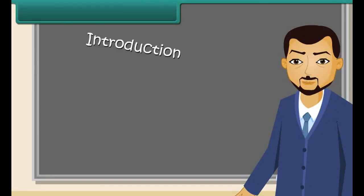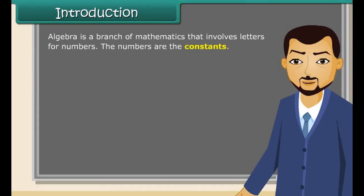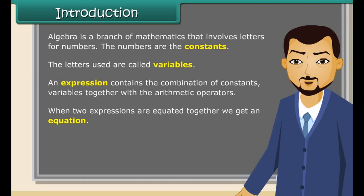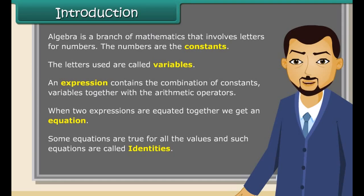Algebra is a branch of mathematics that involves letters for numbers. The numbers are called constants and the letters used are called variables. An expression contains a combination of constants and variables together with arithmetic operators. When two expressions are equated together, we get an equation. Some equations are true for all values, and such equations are called identities.